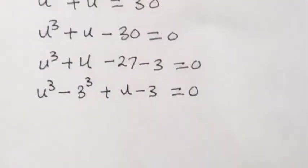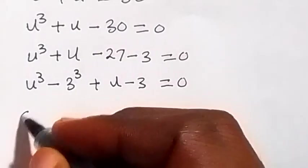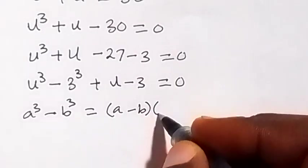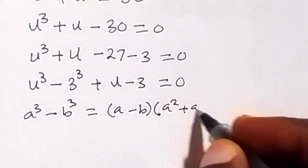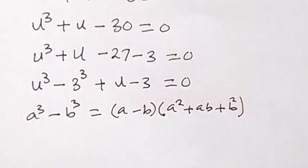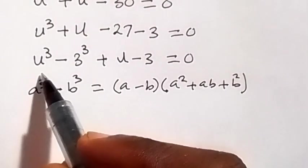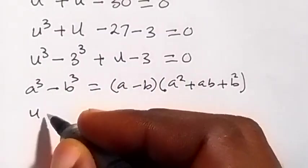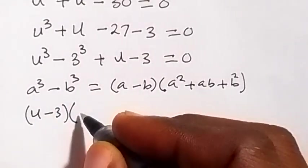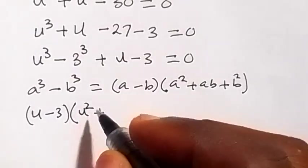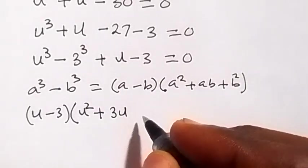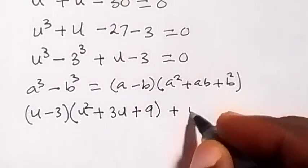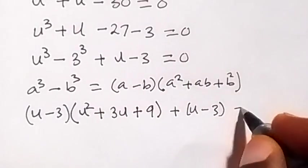Now from here we have a difference of two cubes. Using the identity: a raised to power 3 minus b raised to power 3 equals a minus b, multiplied by a squared plus ab plus b squared. Here a stands as u and b stands as 3, so that gives us u minus 3, multiplied by u squared plus 3u plus 9, then plus u minus 3, which equals to 0.